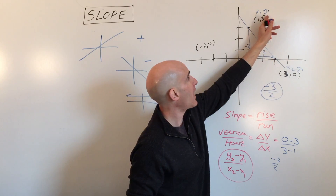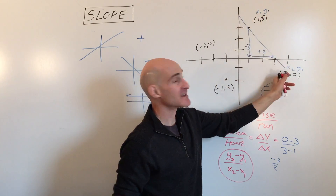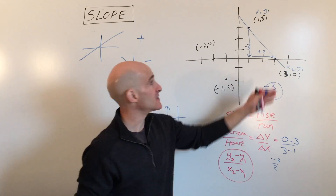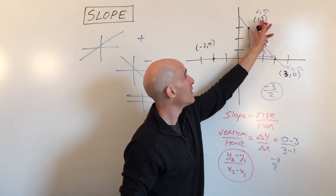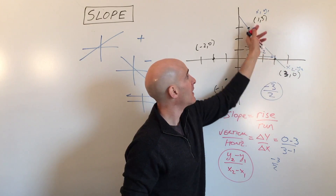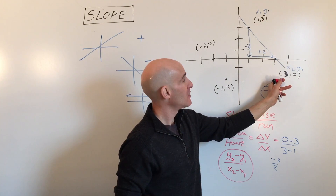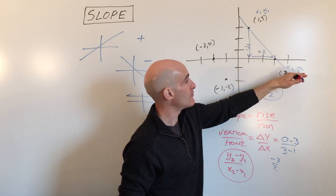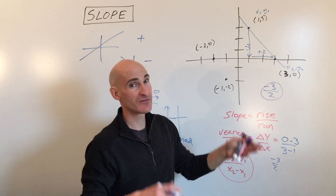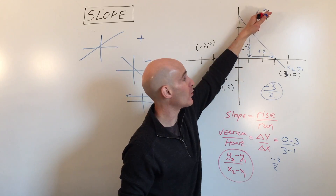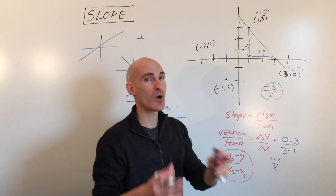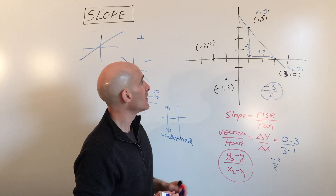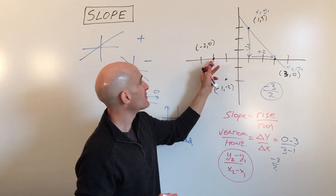One thing to avoid: don't mix up the order midway through the formula. For example, don't do y2 minus y1 and then x1 minus x2. Stay consistent — you can do point two minus point one throughout, or point one minus point two throughout, but don't mix and match.